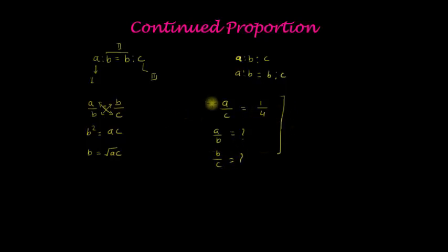Then what do we do? We know since this is in continued proportion, that means b squared is equal to ac, that means b squared is equal to 1 into 4, or b is equal to square root of 4, and we will take positive square root only in this case.